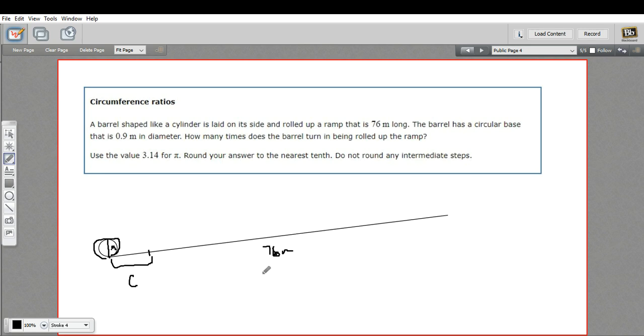To solve this, we're going to take 76 and divide it by the circumference of this barrel. We know how to find circumference. Circumference is the diameter times pi. In this case, the diameter is 0.9, so 0.9 times pi. Let me just use my calculator for that. So 0.9 times 3.14, which is what they want us to use for pi. So that equals 2.826.